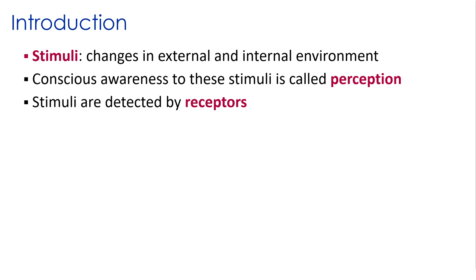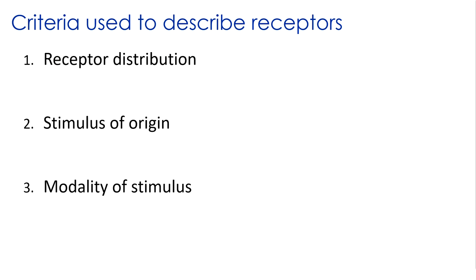Stimuli are detected by receptors in our body, which are specialized cells that monitor changes in either the external or the internal environment. Receptors can be structurally complex, such as the eye or other sense organs, or they can be very simple — just the dendritic endings in the nose for olfaction, or the dendritic endings found in nerves in the skin. There are three criteria we typically use to describe receptors: the receptor's distribution, the stimulus of origin, and the modality of the stimulus.